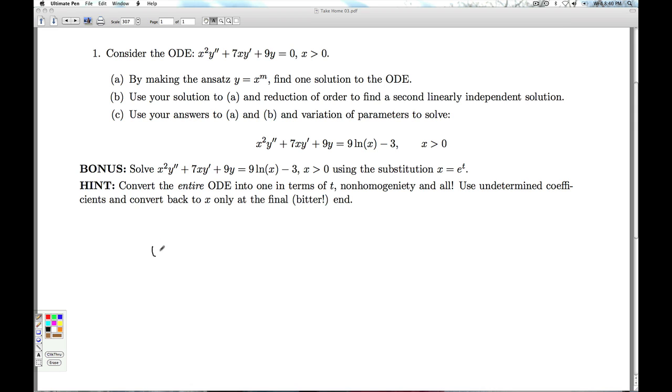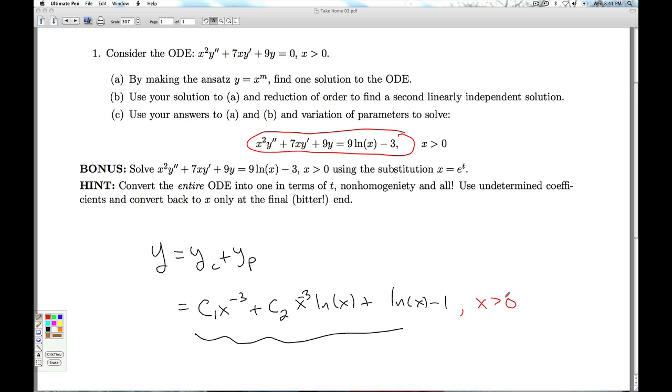So what's our final answer then? y equals yc plus yp. yc is the complementary solution. That's the solution to the homogeneous Diffie Q, which we found to be this, plus the yp, which we found natural log of x minus 1. So that's the general solution to this non-homogeneous Diffie Q. And our interval of validity here, x is greater than 0.